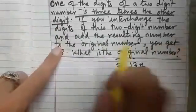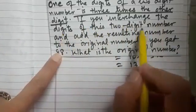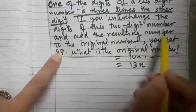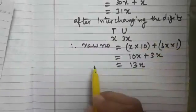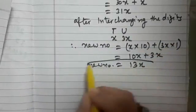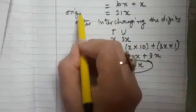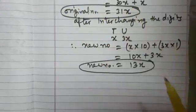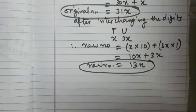Now read the question. The question says if you interchange the digits of this two-digit number and add the resulting number to the original number, this is the resulting number—13x—and this is the original number which is 31x. If we add these two, we get 88.